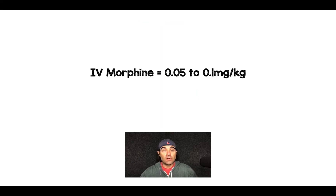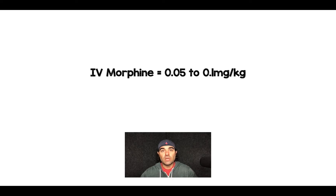The first thing to start off with is the appropriate dosing of IV morphine, which is 0.05 to 0.1 milligrams per kilogram. It's not just 4 milligrams of morphine — we should know how to dose this right off the bat. There'll be some wiggle room here: older patients might need less, patients on chronic opioids might need more, respectively.